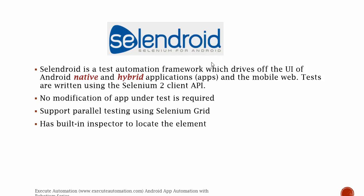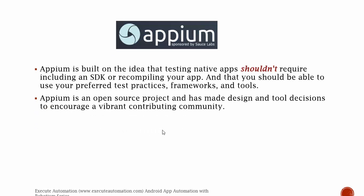No modification of the application under test is required while using Selendroid, and that is the most important concept here. Even in Robotium we will not be changing anything in the application under test, though we will be referencing its library in our project — we'll cover more about that in upcoming videos. Selendroid also supports parallel testing using Selenium Grid and has a built-in inspector to locate elements.